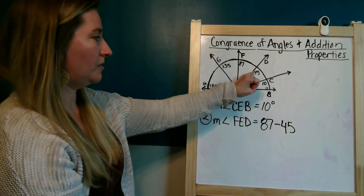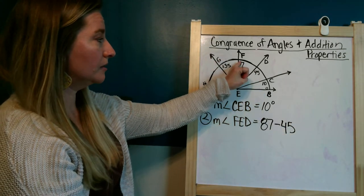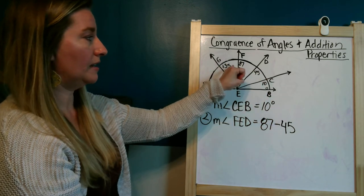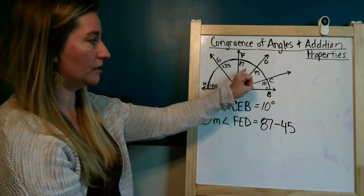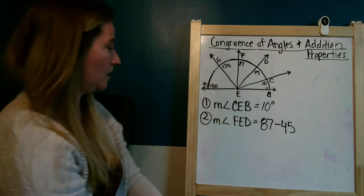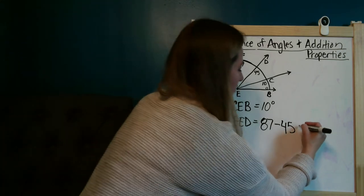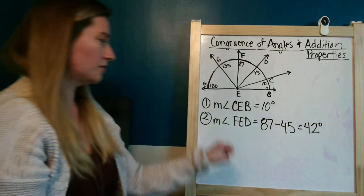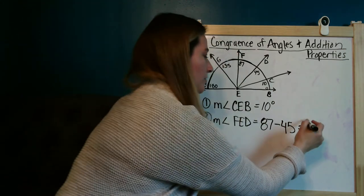Because this 45 degrees and whatever's left that makes up FED will add up to a total of 87. So if I take the 87 and subtract the 45, that gives me this little part that's left here. And when I do that subtraction, I get 42 degrees. So the measure of angle FED is 42 degrees.